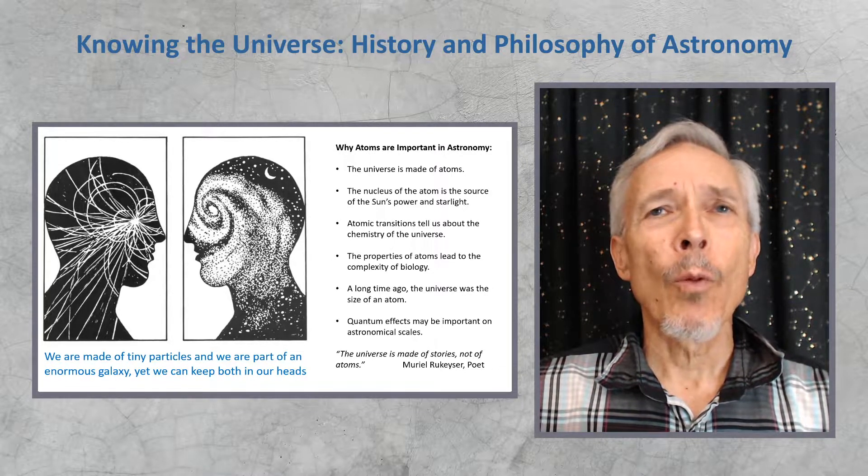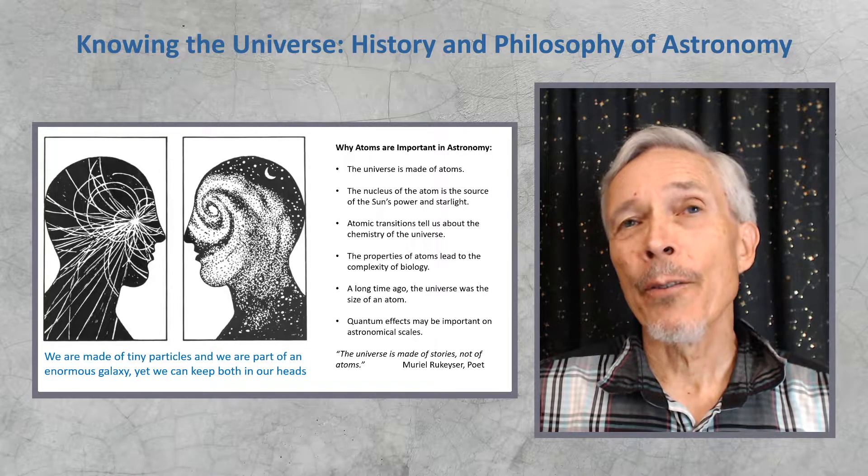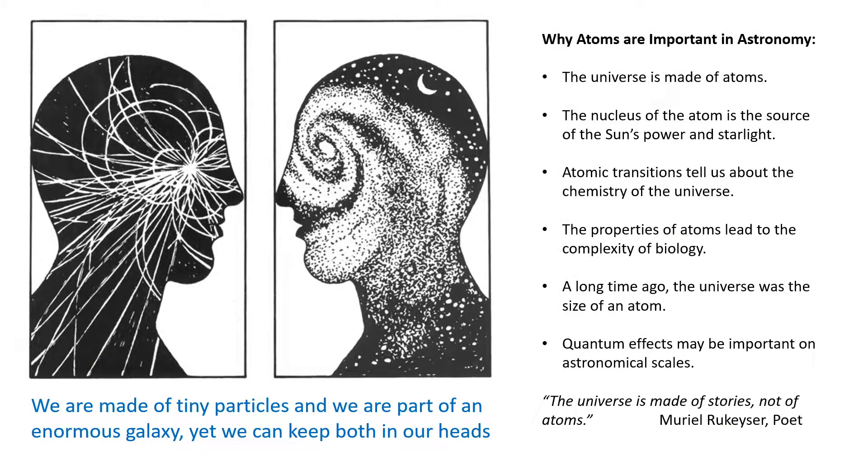This course is about astronomy, so why are atoms important in astronomy? There's a lot of reasons. The universe is made of atoms. The nucleus of the atom is the source of the sun's power and the power of every star in the sky and every star in the universe. Atomic transitions tell us about the chemistry of the universe, what it's made of. And then the properties of atoms lead to the complexity in evolution towards biology. Also in cosmology, a long time ago, the universe itself was once the size of an atom, so we have to understand quantum-scale phenomena and atom-sized properties to make sense of the universe itself. And going in the other direction, it turns out that quantum effects such as entanglement might be important on astronomical scales.